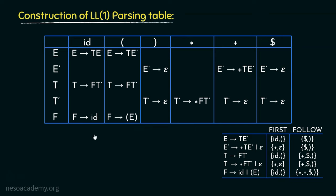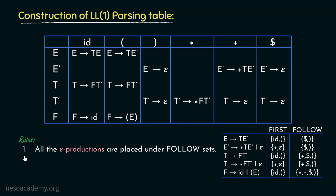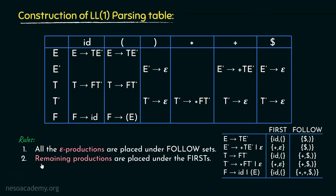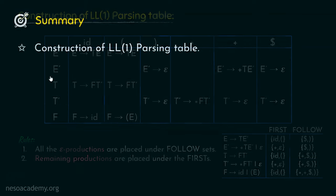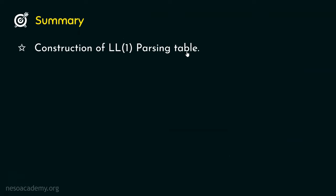This is how the LL1 Parsing Table is constructed. There are two rules to follow. First, all epsilon productions are placed under the follow sets — only two non-terminals were involved in epsilon productions, and their epsilon rules were placed under their respective follow sets. Second, all remaining productions are placed under their first sets. This is the reason we find the firsts and follows of all non-terminals in the grammar — to construct the LL1 Parsing Table. In the next session, we are going to observe the LL1 parsing technique. Thank you all for watching.